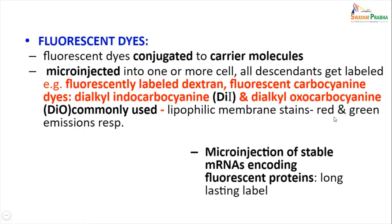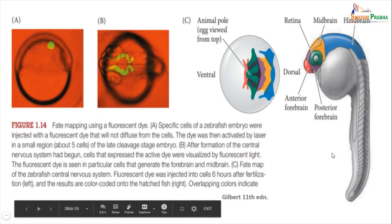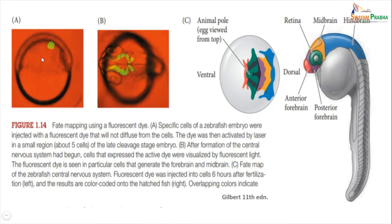Recently, microinjections of stable messenger RNAs encoding fluorescent proteins have been used successfully in fate map studies, with the major advantage of acting as quite long-lasting labels. Here we see the fate map of zebrafish embryo using fluorescent dye. Specific cells of the zebrafish embryo were injected with a fluorescent dye and activated with a laser, showing a small region of about five cells in the late cleavage stage embryo. After formation of the central nervous system has begun, cells expressing the active dye were visualized, showing the dye in cells generating the forebrain and midbrain. The C diagram shows the fate map of the zebrafish central nervous system, with the fluorescent dye injected into cells six hours after fertilization and results color-coded onto the fish.